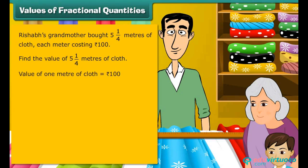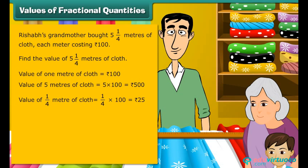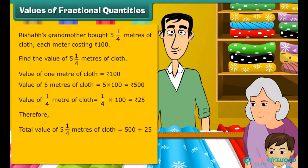Value of one meter of cloth is equal to rupees hundred. Value of five meters of cloth is equal to five multiplied by hundred, which is equal to rupees five hundred. Value of one by four meter of cloth is equal to one by four multiplied by hundred, which is equal to rupees twenty five. Therefore, total value of five and one by four meters of cloth is five hundred plus twenty five, which is equal to rupees five hundred and twenty five.